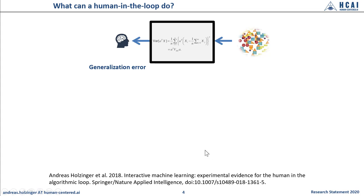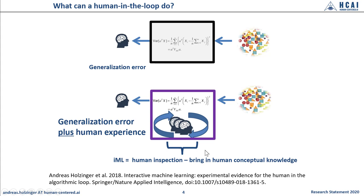This always leads to a generalization error. Here, a human in the loop may be beneficial because the human can sometimes — and I emphasize sometimes, not always — bring in context understanding, implicit and conceptual knowledge. The idea of making use of both human intelligence and artificial intelligence, as Tversky and Kahneman in 1974 described as System 1 and System 2 together, is amazing. Imagine what such a combined system would be capable of.